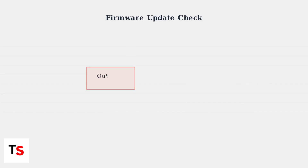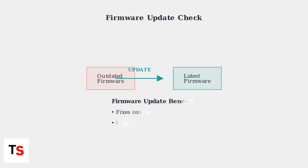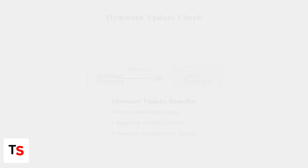Finally, outdated firmware can cause connection problems and hidden bugs. Make sure your camera's firmware is up to date. Regular firmware updates can resolve compatibility issues and improve overall system stability.